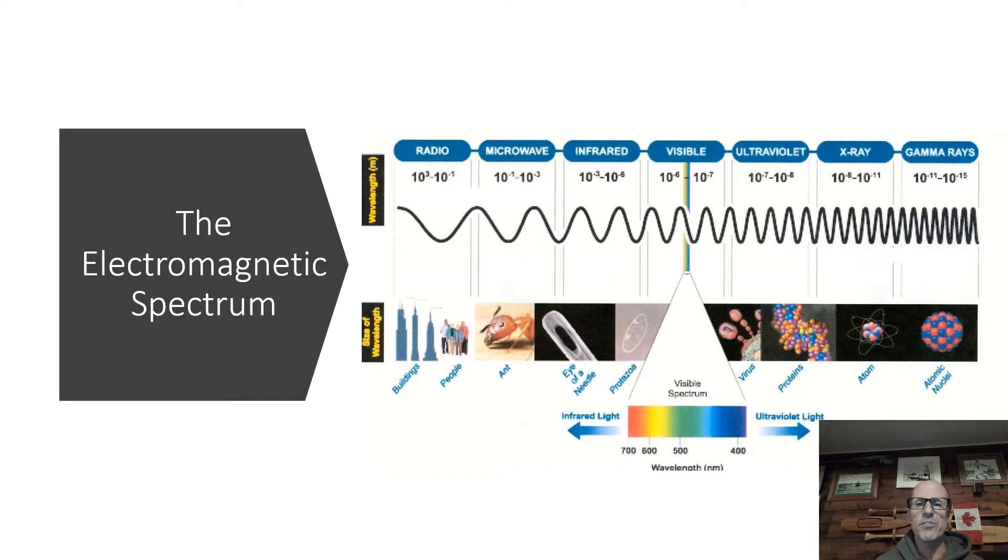When you look here, this is the visible spectrum or the electromagnetic spectrum. This is a very narrow band of wavelengths that humans can see. Like I said before, we can't see very well.